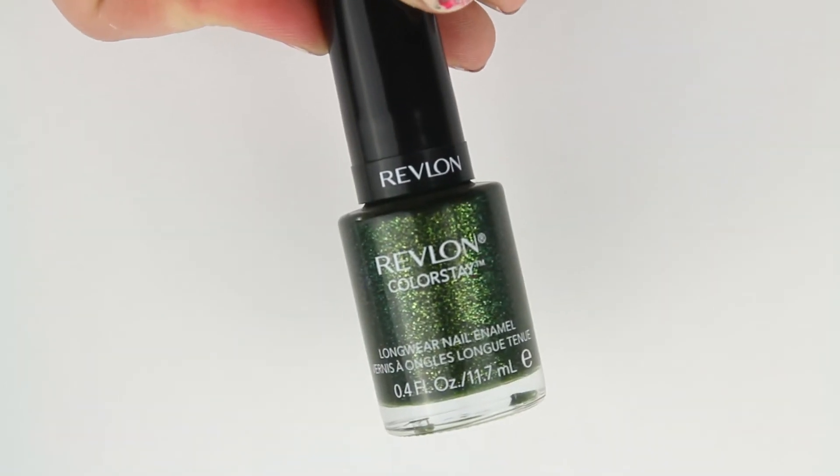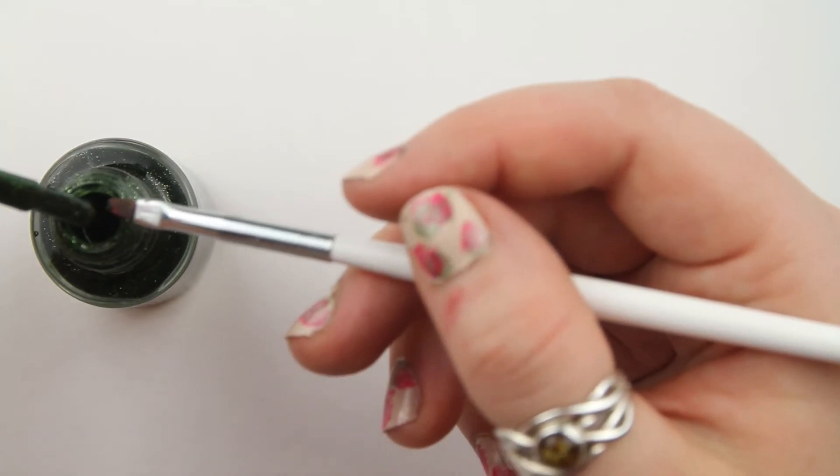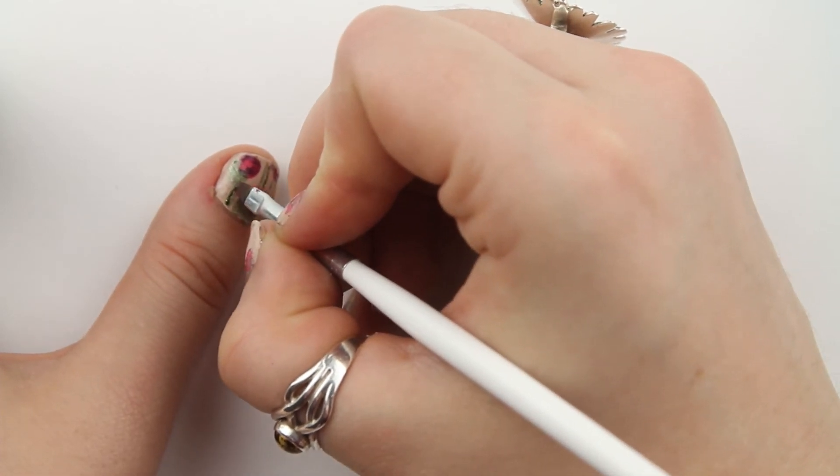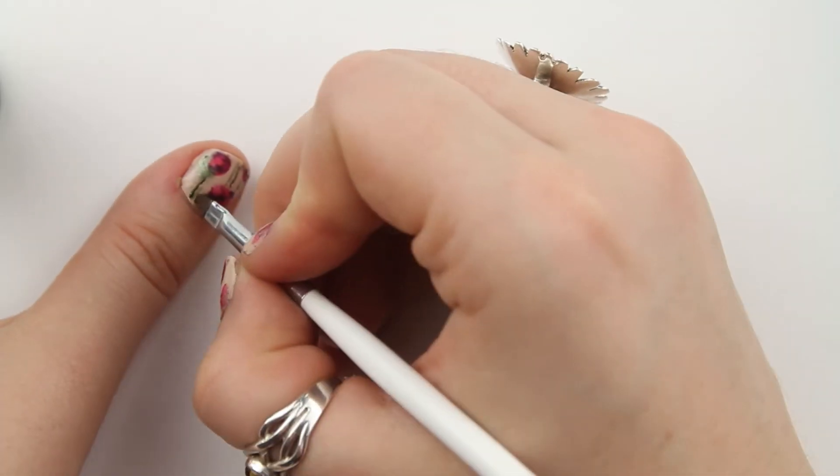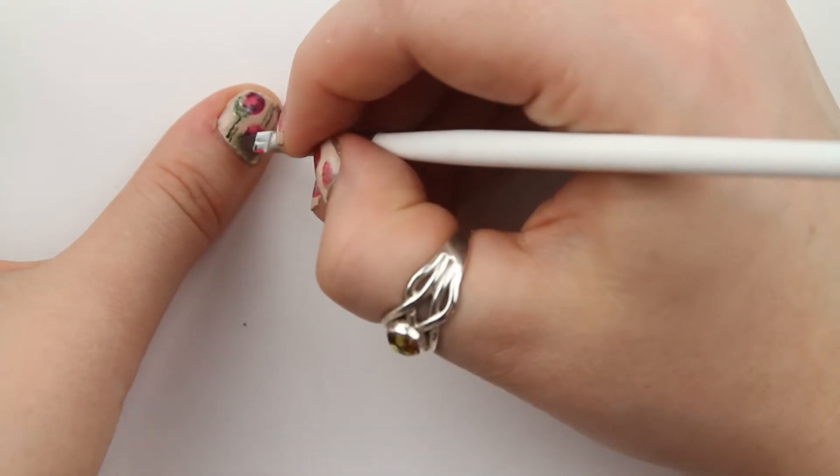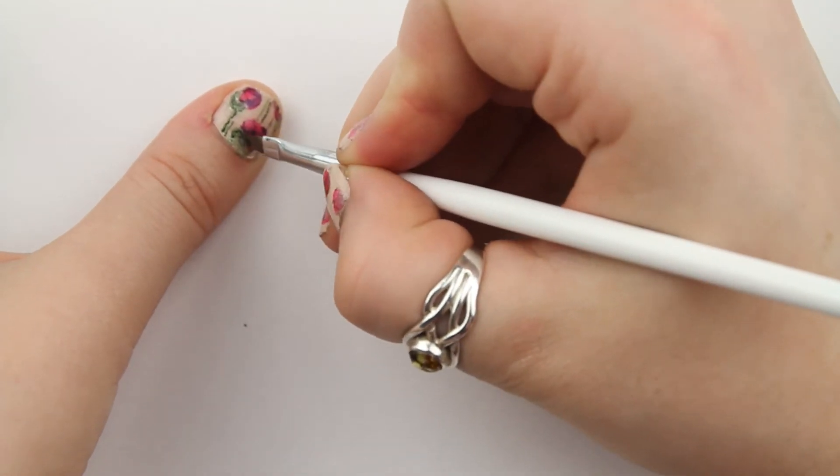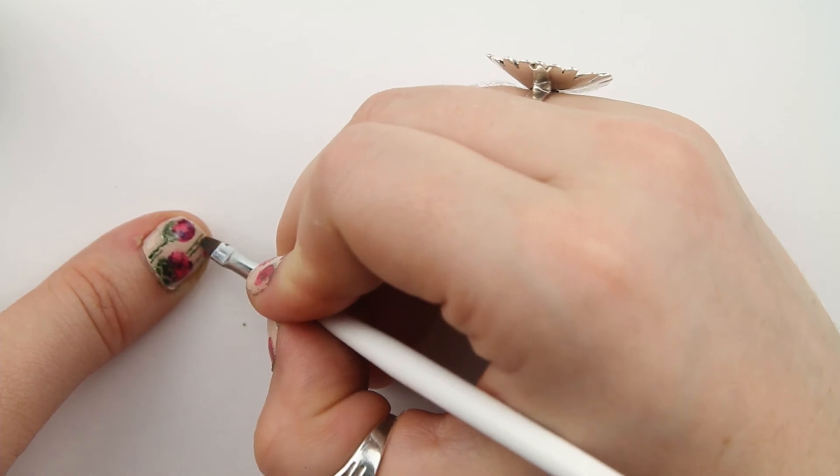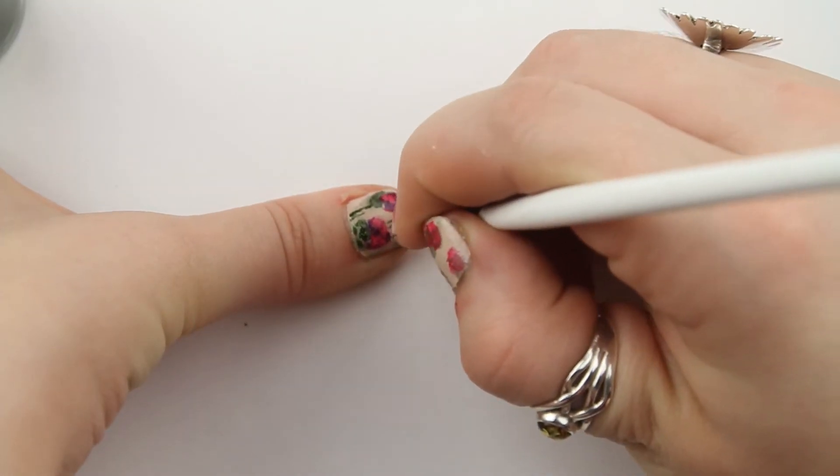I then used Revlon's Color Stay in shade Rainforest 220 to add darker green. This enhanced the leaves and lines, and also added a different tone and a bit of sparkle. I did this in the same way across all the nails, adding more definition.